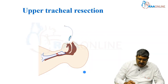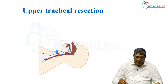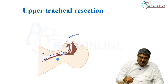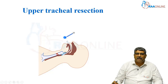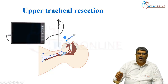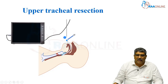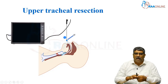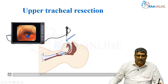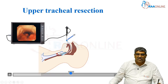Coming to a tracheal resection in the upper part of the trachea, an LMA is being inserted now and a circuit is connected. The patient is being ventilated and a bronchoscopy is passed through the LMA. Here you can see the tracheal mass in the screen — the tracheal mass in the upper trachea.